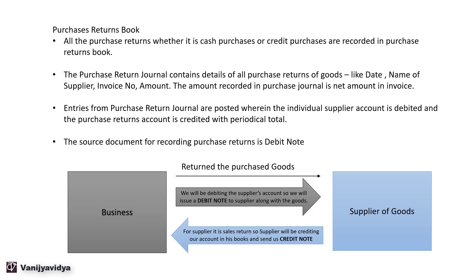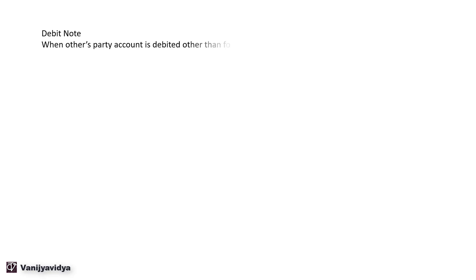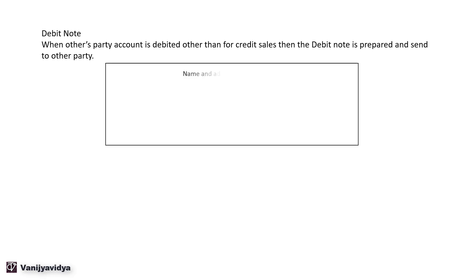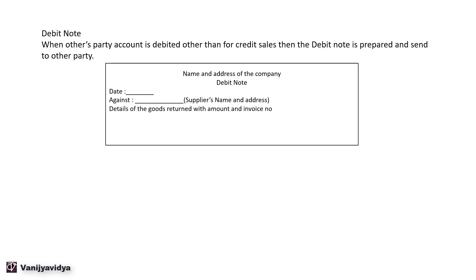Let us understand debit note and credit note in detail. A debit note is prepared and sent to the other party when their account is debited for a purpose other than a credit sale. The format of a debit note includes: name and address of the company, the heading 'Debit Note', date, the supplier's name and address, details of goods returned with amount and invoice number, delivery challan number, and signature of the authorized person.